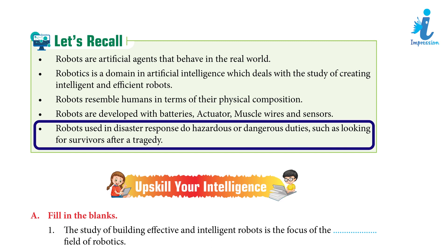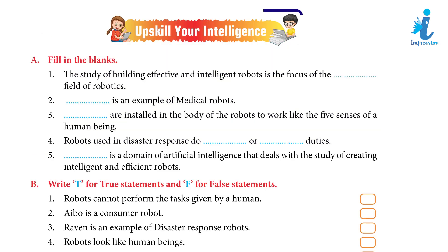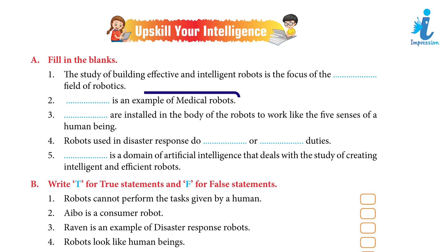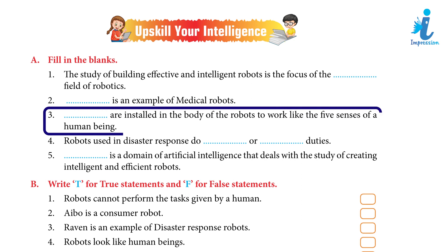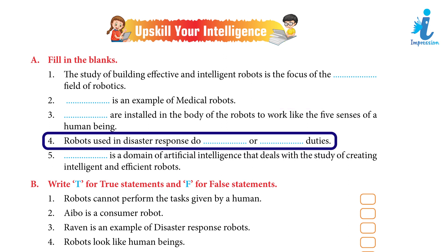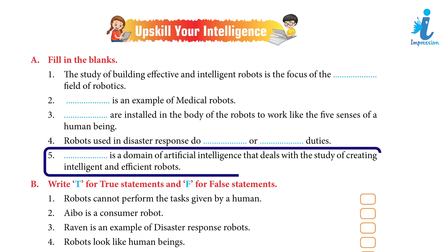Upskill Your Intelligence — Fill in the Blanks: 1. The study of building effective and intelligent robots is the focus of the Artificial Intelligence field of robotics. 2. Bionic prosthesis is an example of medical robots. 3. Sensors are installed in the body of robots to work like the five senses of a human being. 4. Robots used in disaster response perform hazardous or dangerous duties.